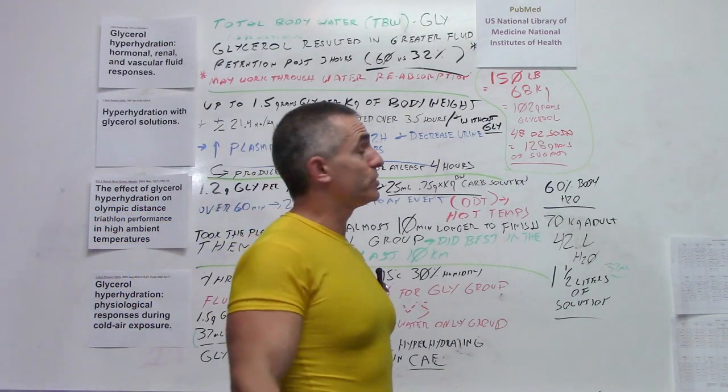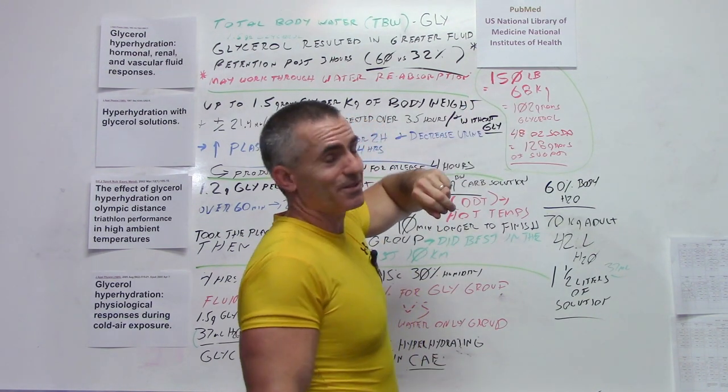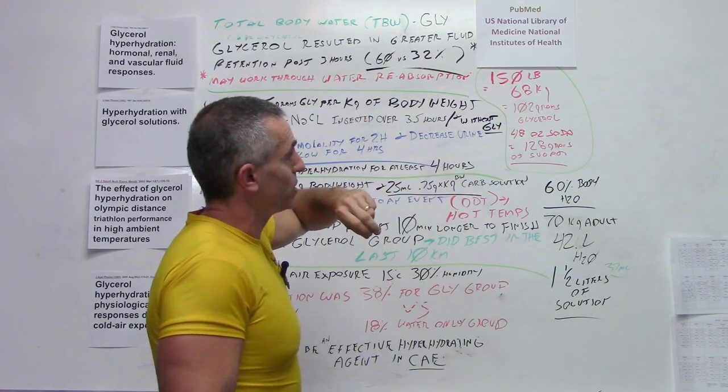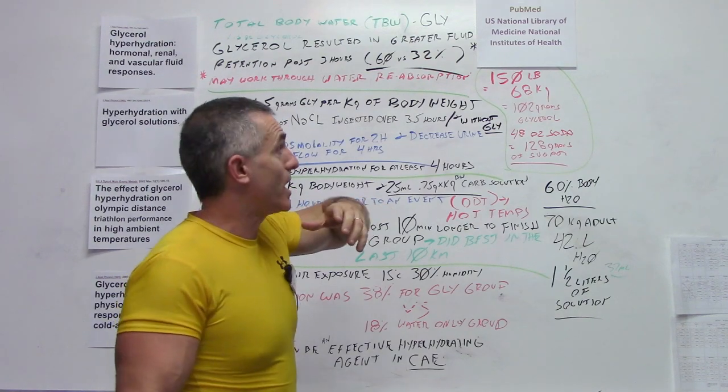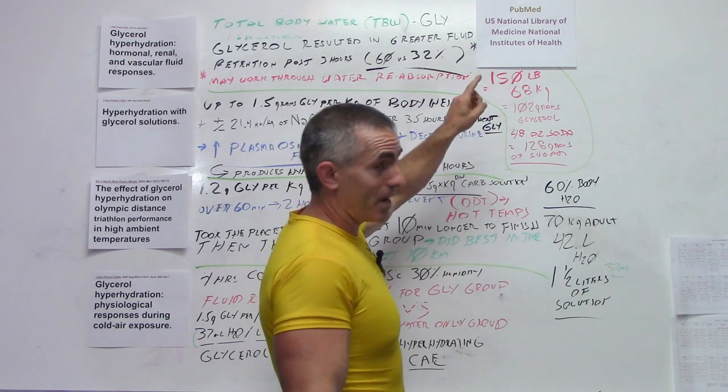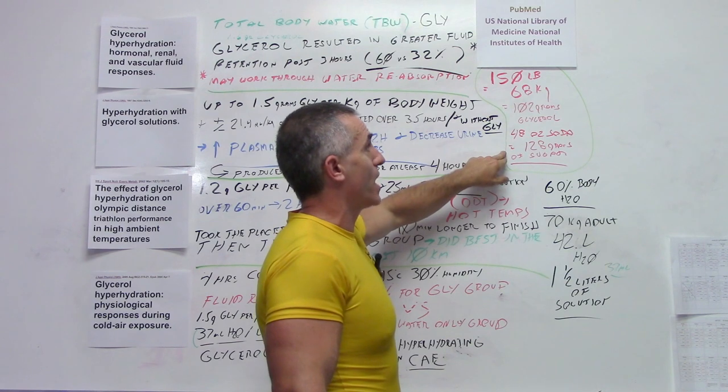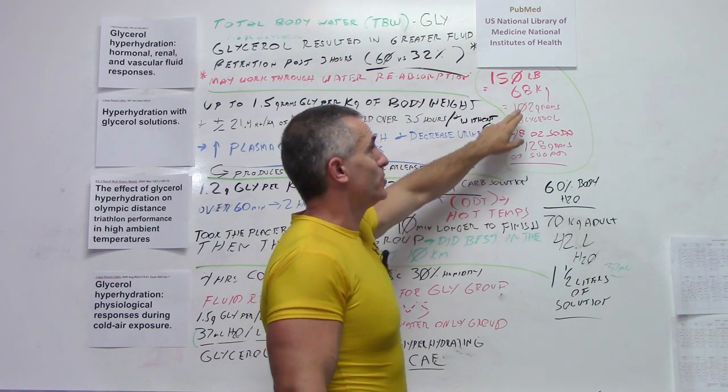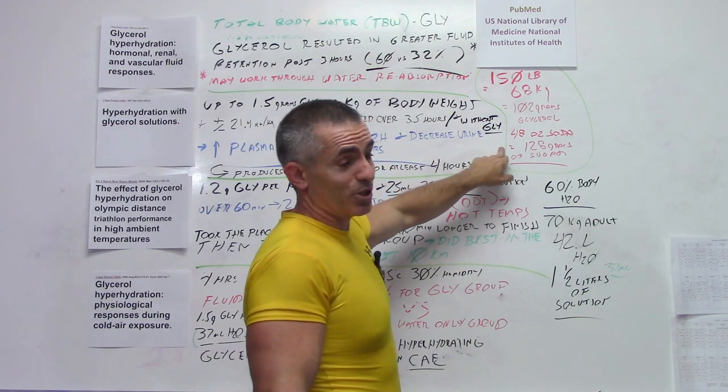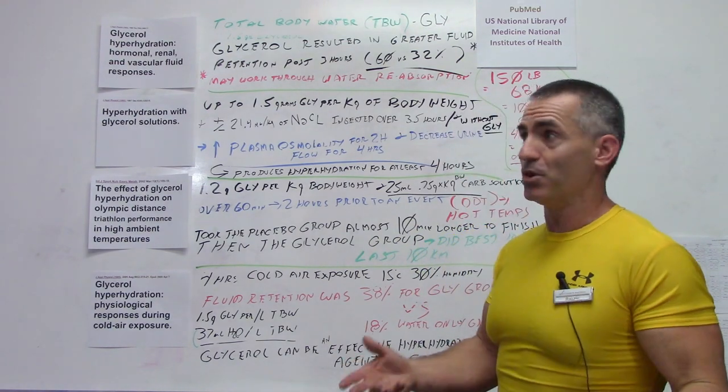For those in metrics, a 150-pound man will weigh about 68 kilograms, which means the average individual, when looking at a certain amount of glycerol, is going to be taking about 102 grams of glycerol. Sounds like a lot, but let's put it in perspective. A 48-ounce soda has up to about 128 grams of sugar. So 102 grams of glycerol, which is very sweet tasting, compared to 128 grams of sugar - that gives you the idea as far as how it weighs out with things from the normal world.